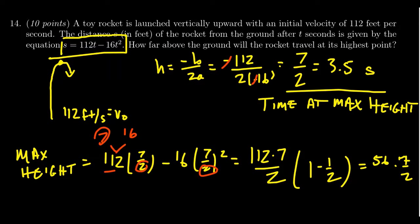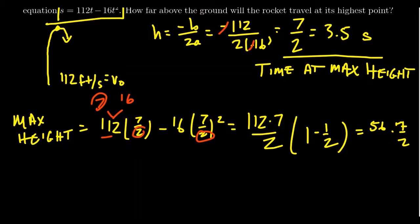So we end up with this 56 times 7 over 2. Of course, 2 does go into 56, that's an even number. That would leave behind 28, like so. And so we have 28 times 7, which would then give us 196. And we should put the units here. This is going to be feet. So the maximum height of the rocket is going to be 196 feet.